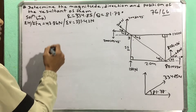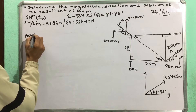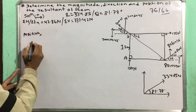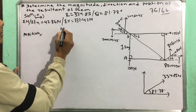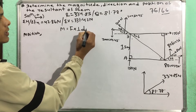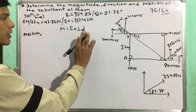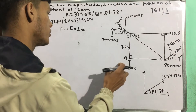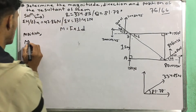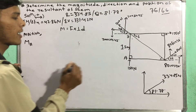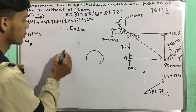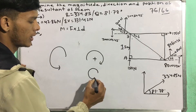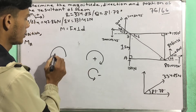This is the position. The position will be determined by the perpendicular distance. Taking the moment at point A, the moments are clockwise.